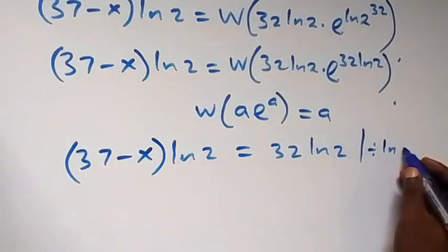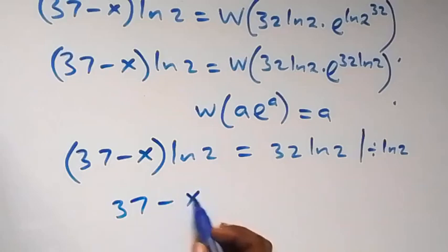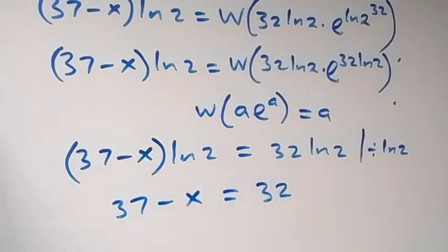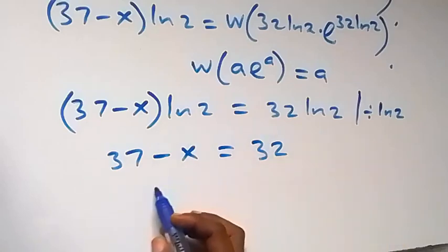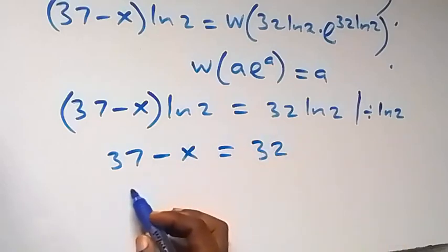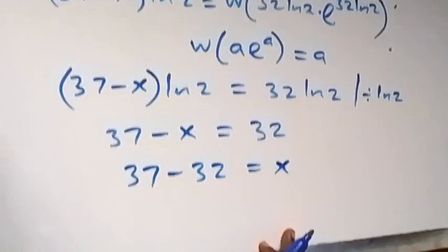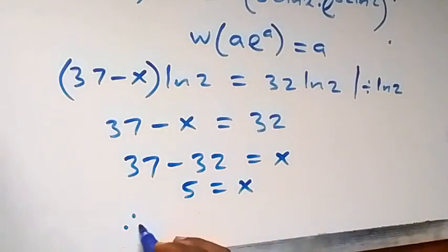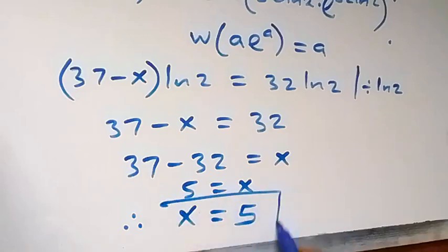Dividing both sides by ln 2 — the ln 2 terms cancel out — and we have 37 minus x equals 32. Solving for x: taking minus x to the other side gives plus x, and taking 32 gives 37 minus 32 equals x. Therefore x equals 5. In this solution, x equals 5.